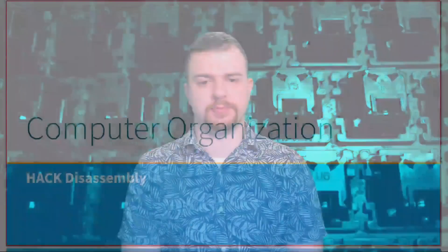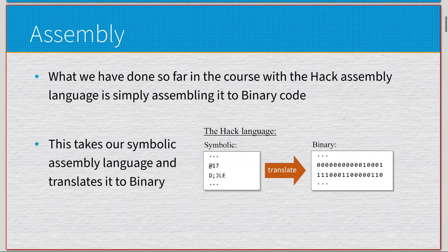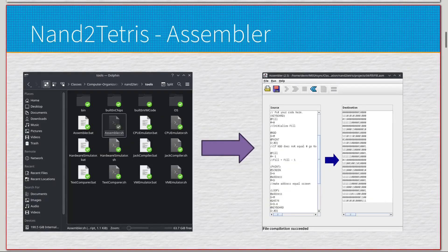This is a quick video that is an extension on assembly — it's going to be on disassembly, the reverse of everything covered in chapter four. We're still on the Hack computer using Hack assembly language. The assembler in the nanotetris suite takes in source code and generates binary strings: it takes in symbolic code, assembles it, and outputs binary data.